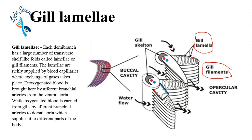The gill lamellae are richly supplied with blood capillaries where exchange of gases takes place. If we look at the gill lamellae, they are richly supplied with blood vessels.